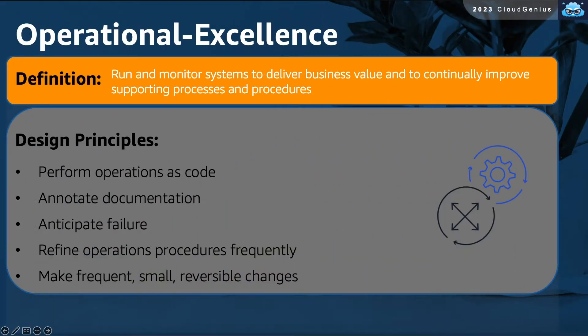The first pillar is named Operational Excellence. It is used to improve your processes and procedures and make sure that you rely more on automation rather than following manual procedures.